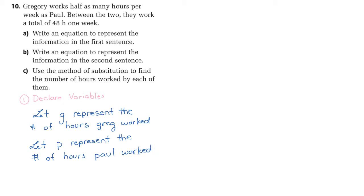The second step in our process is we are going to define equations. Really this second step in the process is really part A and part B. Write an equation to represent the information in the first sentence. Write an equation to represent the information in the second sentence. Essentially, this question is trying to teach you how to go through the process of setting up a system of equations to solve a problem. The first equation, if Gregory works half as many hours as Paul works, Gregory's hours is equal to one-half of the hours that Paul works. And this is equation one.